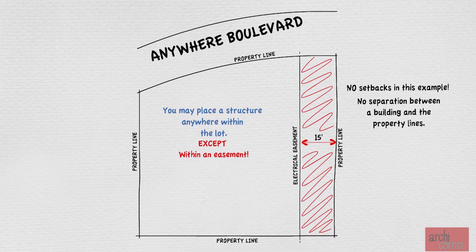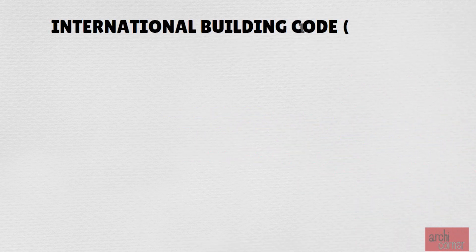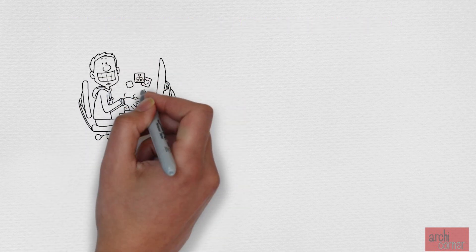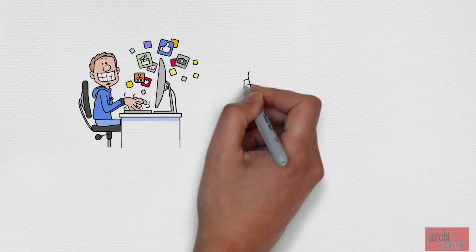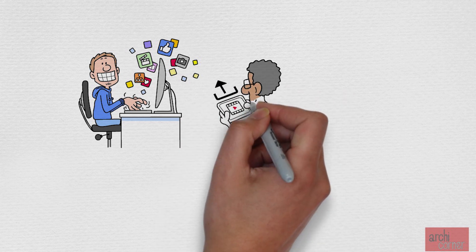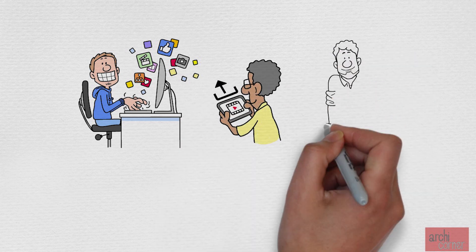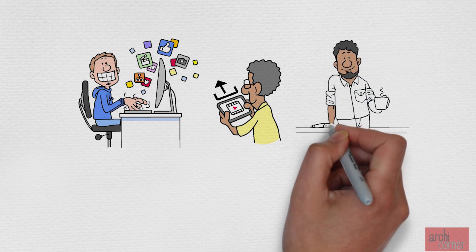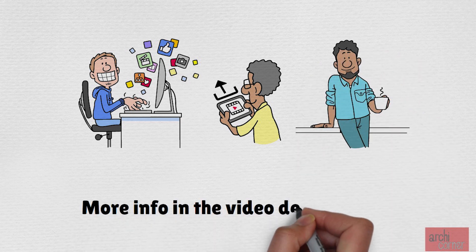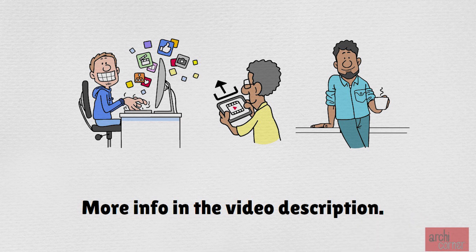Now that you know the types of separations required by zoning setbacks and easements, let's talk about the building code and how it fits into all of this. But before I get to that, I'd like to ask that you hit that like button, subscribe to my channel, and share this channel with others who may like this type of content. If my videos have helped you professionally, please consider buying me a coffee or becoming my patron through Patreon. Information to all these accounts is in the video description.